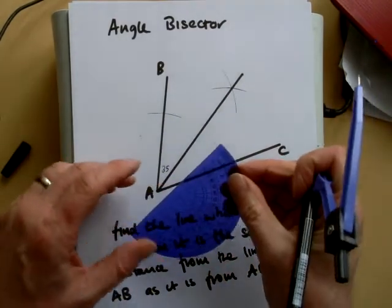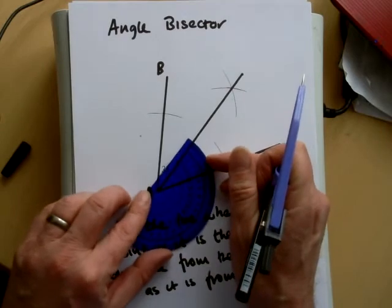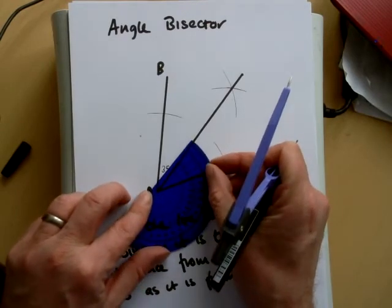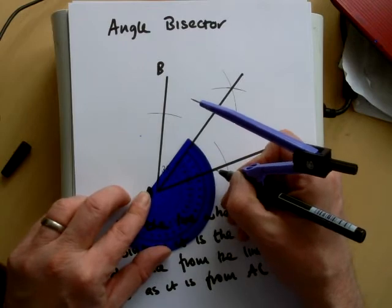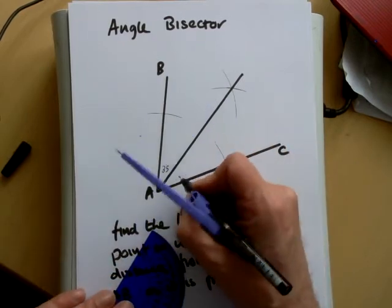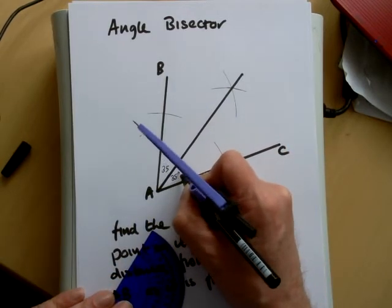I'll measure the other angle here. And it is 35. So we have the angle bisector.